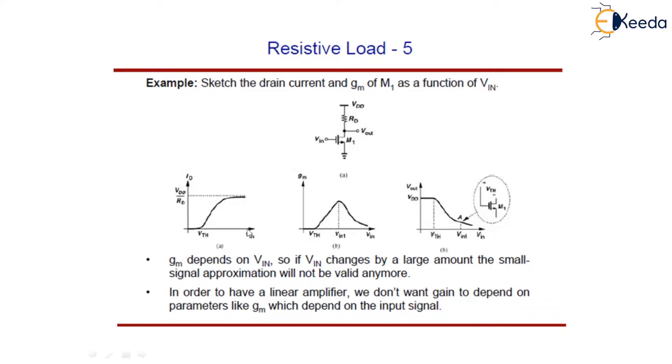If R1 is less than Rd, and since in saturation gm equals μn Cox W/L (VIN minus VTH), the transconductance begins to rise for VIN greater than VTH. In the triode region, this gm becomes μn Cox W/L VDsat, falling as VIN exceeds VIN1.